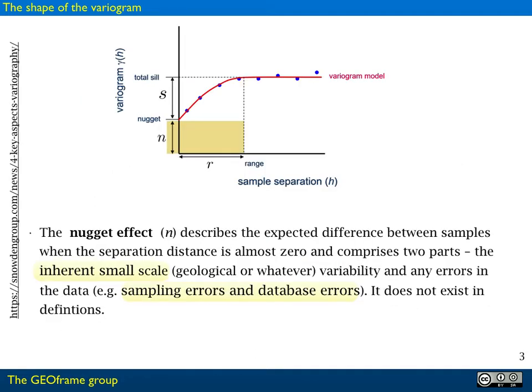The nugget is an effect at the origin. It appears when we have sampling errors, database errors, or we have processes which require a finer resolution in datasets, spatial resolution indeed. So it's called nugget, like the gold nugget, to say that there is something concentrated that has to be further investigated.